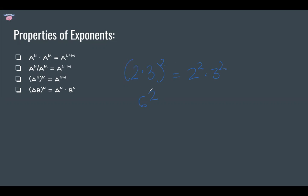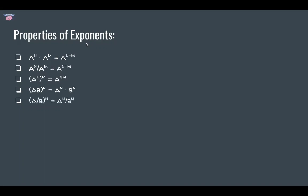Let's check it: 6 squared is 36, 2 squared is 4, 3 squared is 9, and 4 times 9 is 36. That works. Similarly, a divided by b, to the power of n, is equal to a to the power of n divided by b to the power of n. A specific constraint is that b is not equal to 0, because you cannot divide by 0.